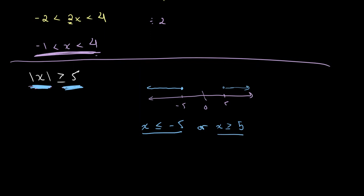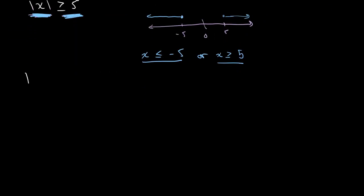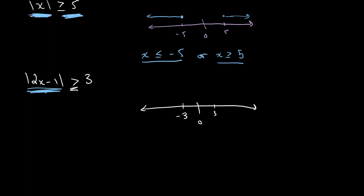Let's look at another example: the absolute value of 2x minus 1 is greater than 3. Last time it was less than, this time it is greater than 3. On a number line, here is 0, here is 3, and here is negative 3. The magnitude is greater than 3, meaning the distance from 0 is greater than 3 units. On the right side it goes beyond 3, and on the left side we get values less than negative 3. So we write: 2x minus 1 is less than negative 3 or 2x minus 1 is greater than 3.